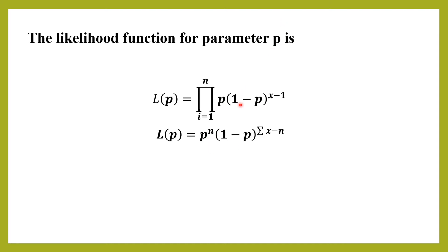Then (1−p) has (x−1) in the exponent, so the product converts the x terms into a summation, giving (1−p)^(Σx − n). The constant 1 in (x−1) applied across n terms becomes n, so the exponent is summation of x minus n.